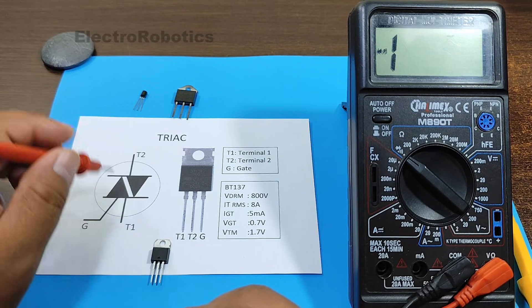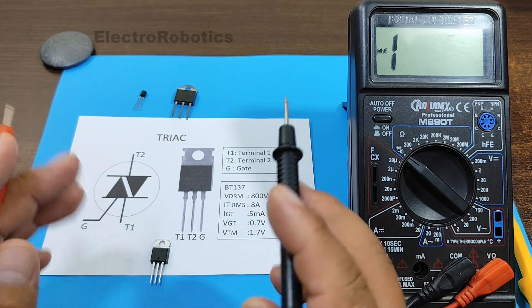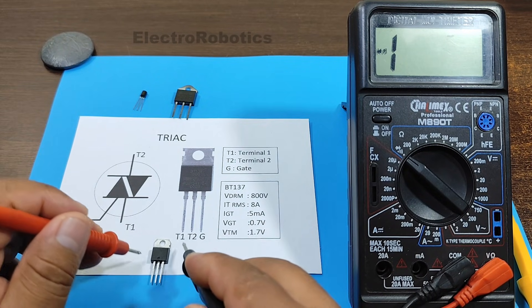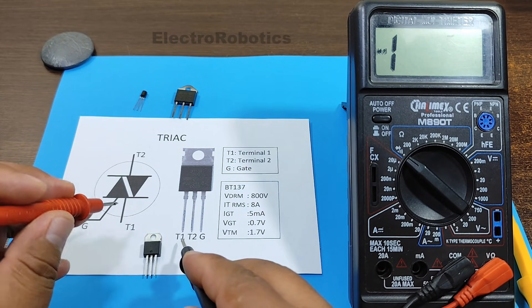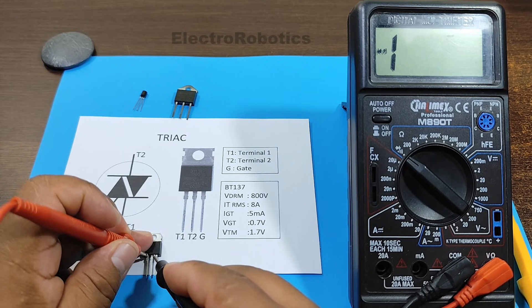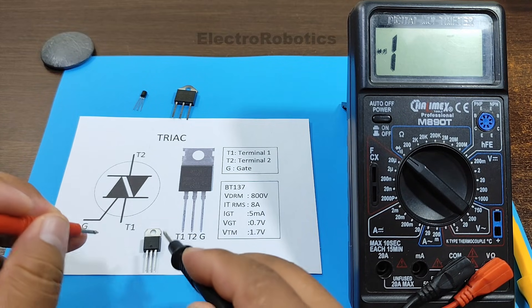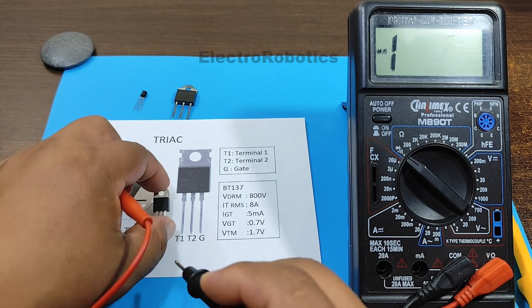Now, between T1 and T2, you should never measure a value. Otherwise, it would indicate that the triac is in bad condition. Let's see between T1 and T2. Remember, it shouldn't measure anything. This triac is in good condition.